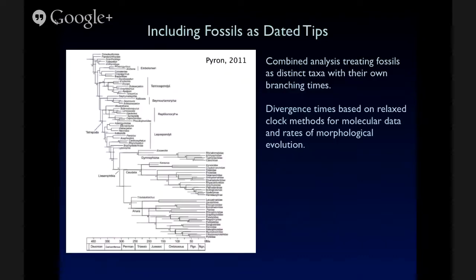So one way to deal with these time issues is to include the fossils directly as data tips. And those penguin phylogenies I was showing you, the fossils were just all included as terminal taxa, but we weren't including the age information directly in the analysis. And so methods have been developed to allow us to do that. Pyron was the first to include fossils as data tips in a Bayesian framework. And here the combined analysis is treating each fossil as a distinct taxa with its own branching time, so it can occur at any time before the present. And the divergence times are based on relaxed clock methods for molecular data and rates of morphological evolution.